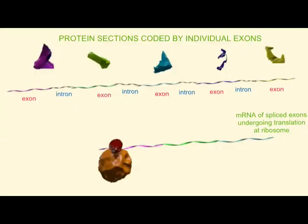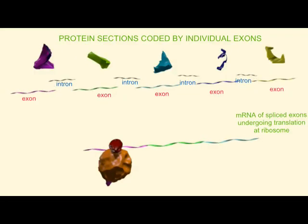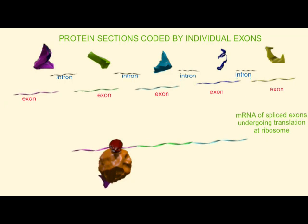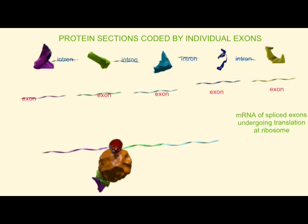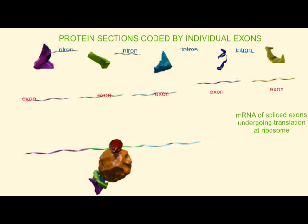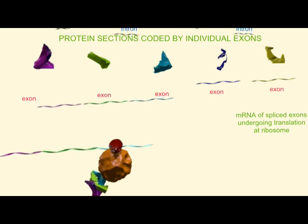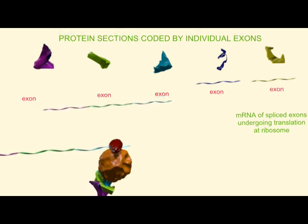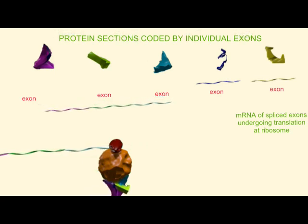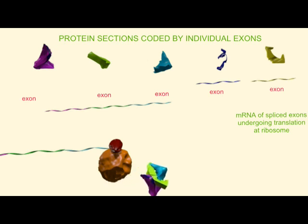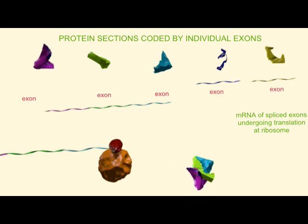Not all cells need to include the same exons in the mRNA, and thus, in this example, if each exon codes for a specific portion of the protein product, the parts of the protein which will be translated depend on which of the exons are included in the mRNA.